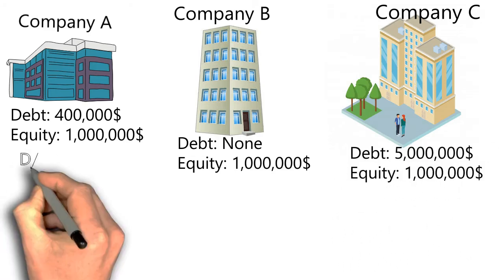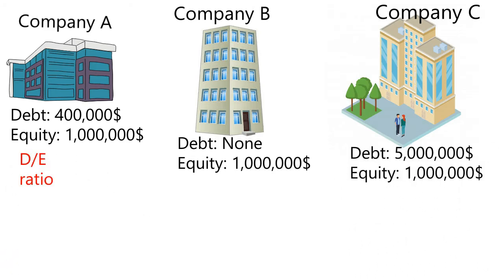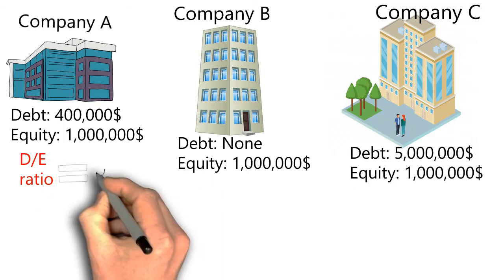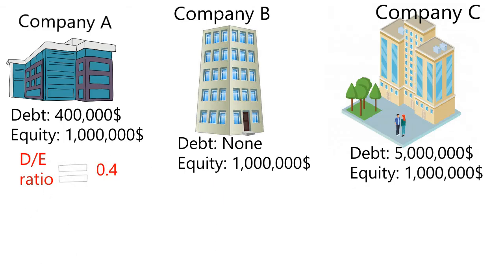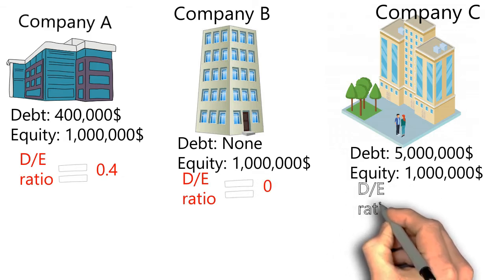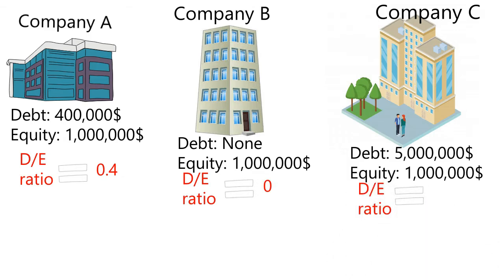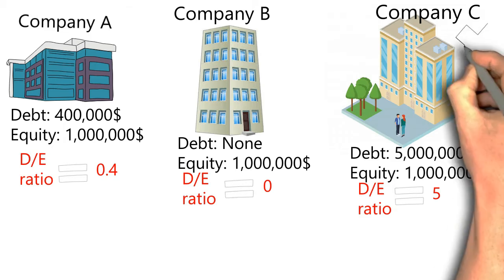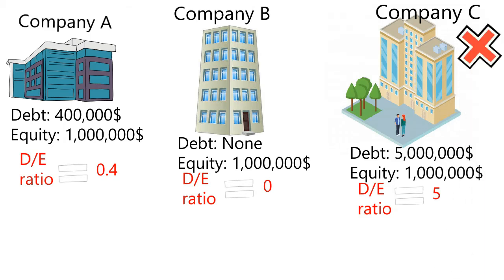By calculating the formula, Company A will have a debt to equity ratio of 0.4. Company B will have a debt to equity ratio of 0. Company C will have a debt to equity ratio of 5. Now let's evaluate the companies. We will not choose Company C as it has a huge debt and higher risk for bankruptcy if they can't pay off the debt.